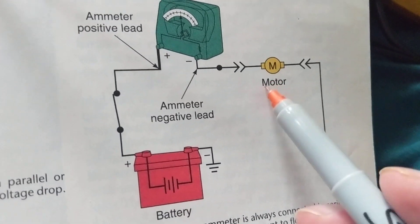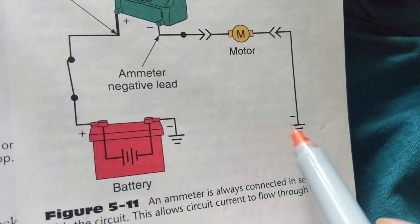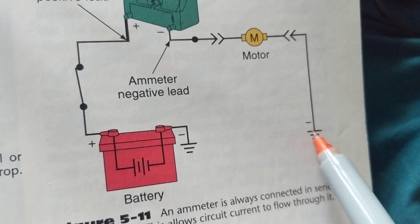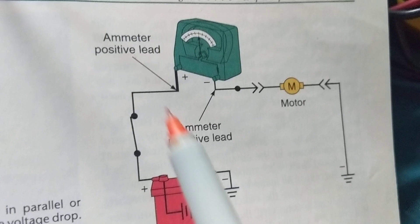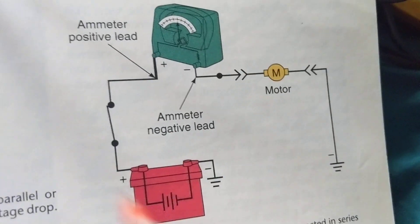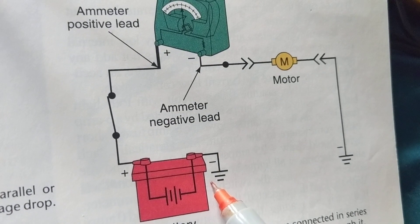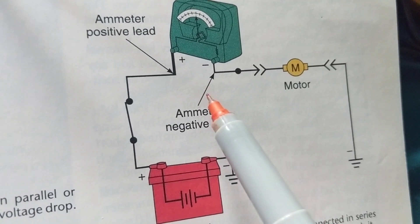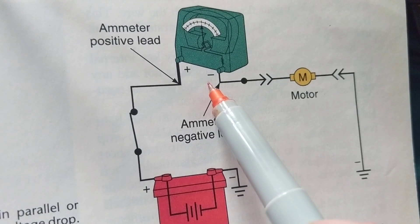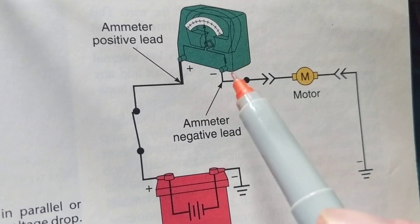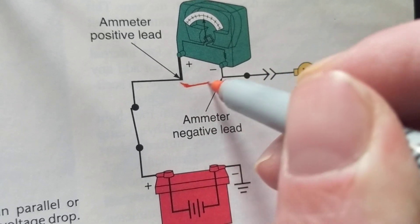The ground symbols shown here are connected — this point is the same as that point, even though there's an apparent gap. This is the same symbol repeated. Now we want to measure current. Current flows through the wires, through the motor, and back. To measure current with a meter, we have to break the circuit — physically separate the wire.